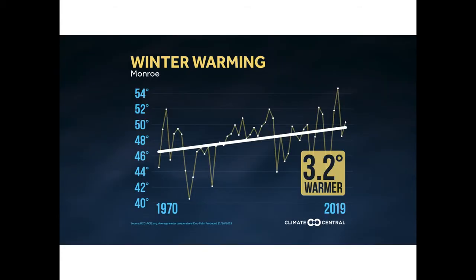Looking at more local data: in most of the eastern United States, the season warming the most is winter. I pulled data for Monroe showing the change in temperature from 1970 to 2019. The average temperature has gone up 3.2 degrees over that period. Some years are warmer, some colder, but the general trend through time is winter warming.